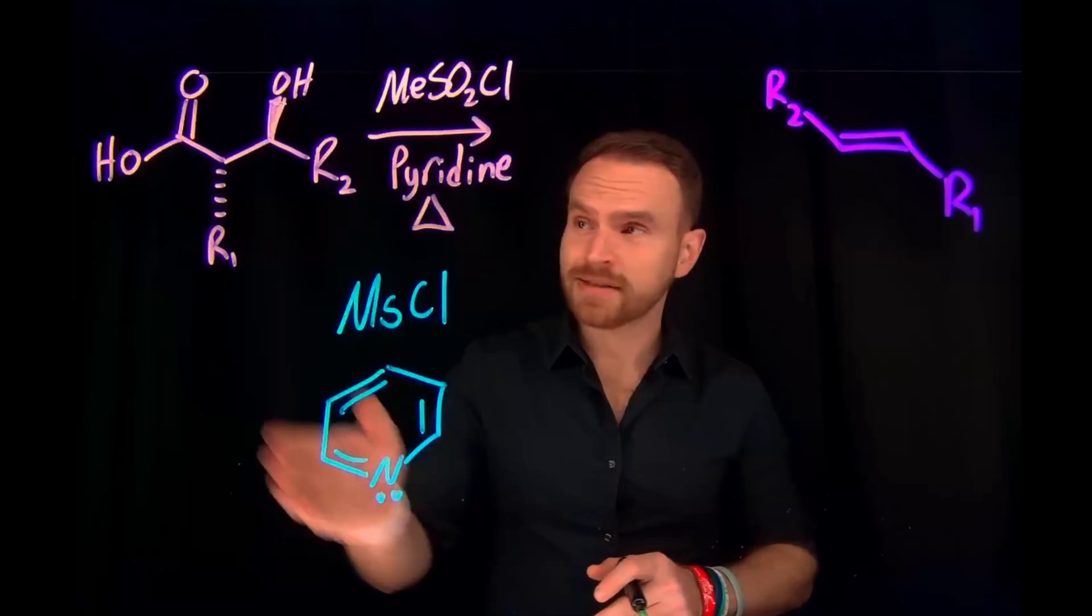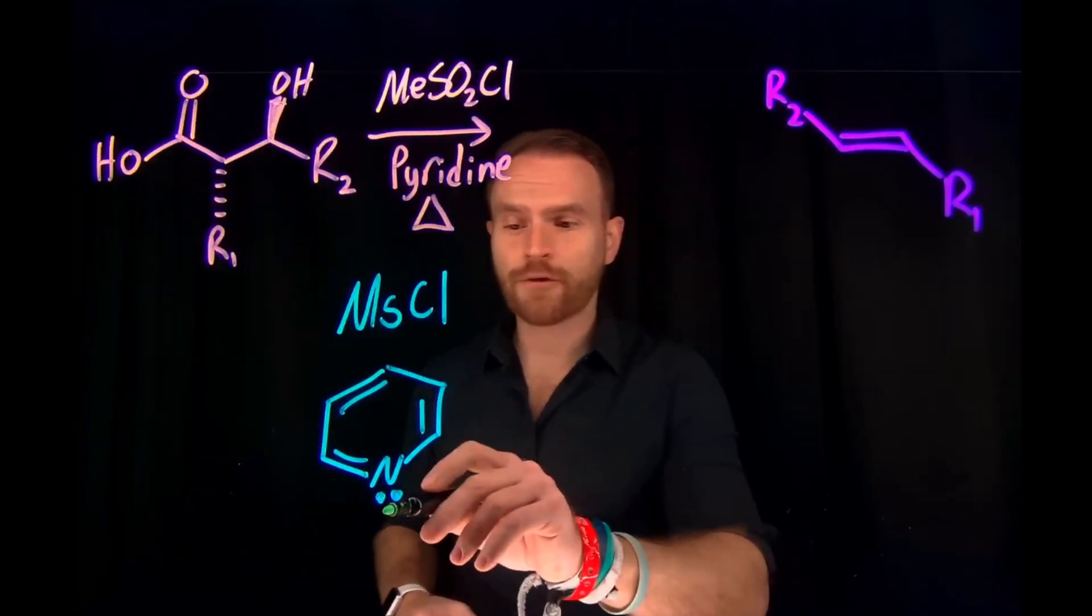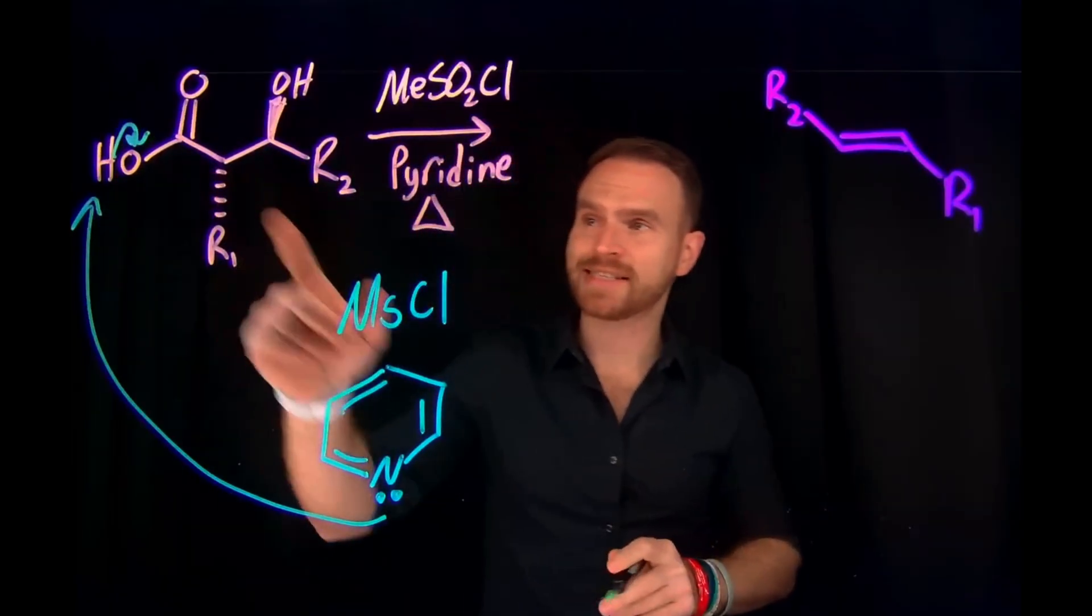Since now you know that we have a base and we definitely have an acid in the form of this carboxylic acid, the first step of this reaction is going to be to deprotonate that acid to give us an acetate at that position.